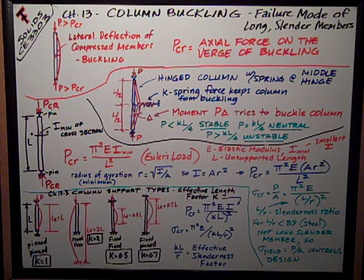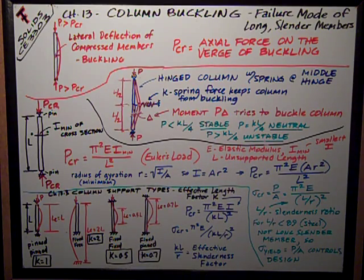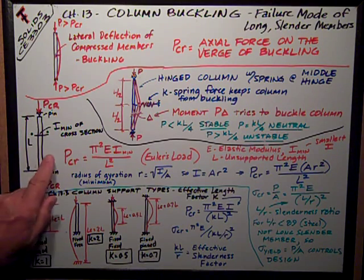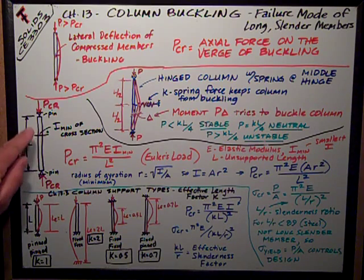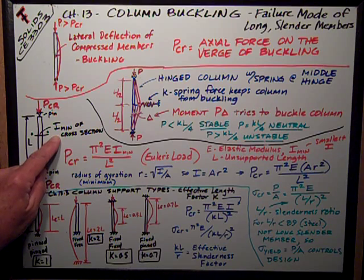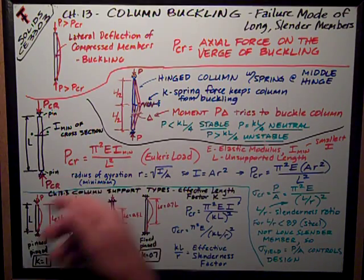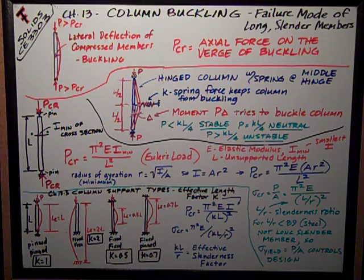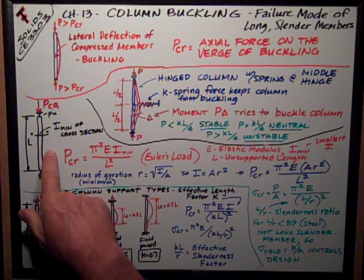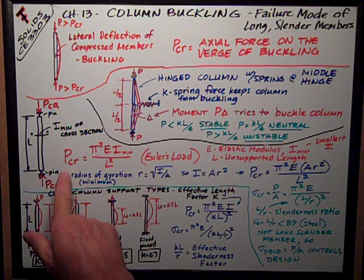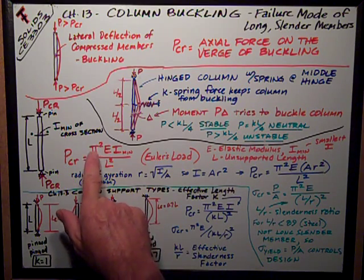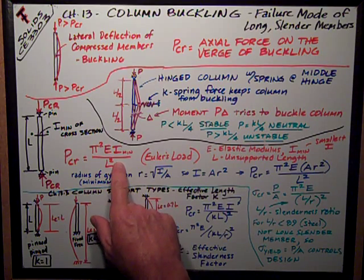So we need to get a handle on that number — the amount of spring force that the column's geometry, shape, and length provide. For a column of height L, pinned at the top and bottom, with a cross-sectional moment of inertia I, we can use the elastic curve equations to derive Euler's load formula: P-critical equals pi squared times E times I over L squared.